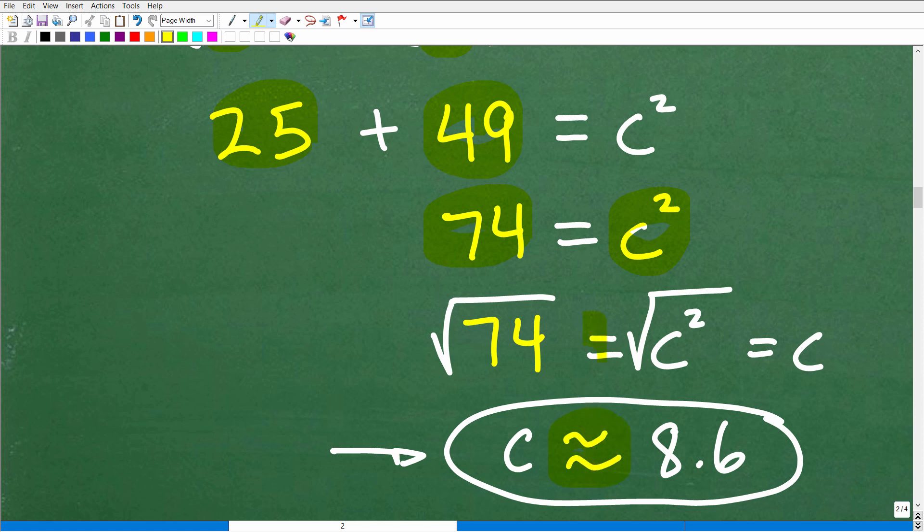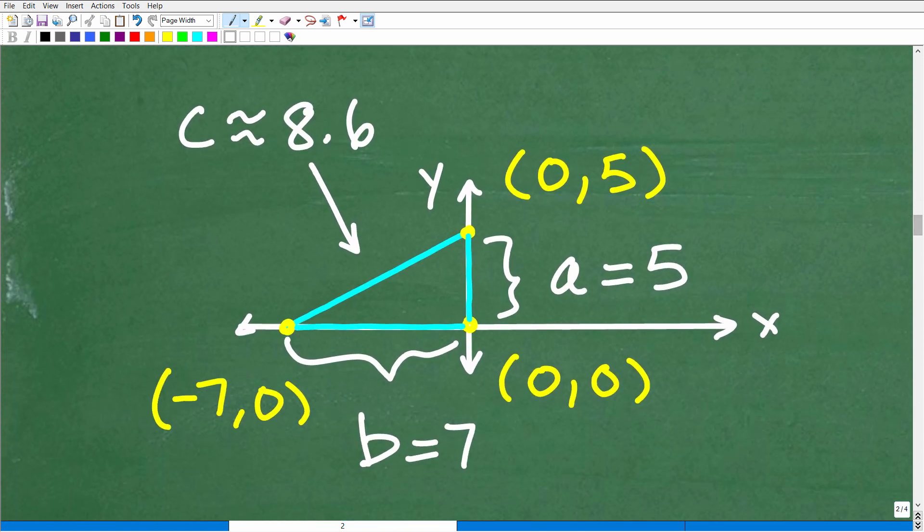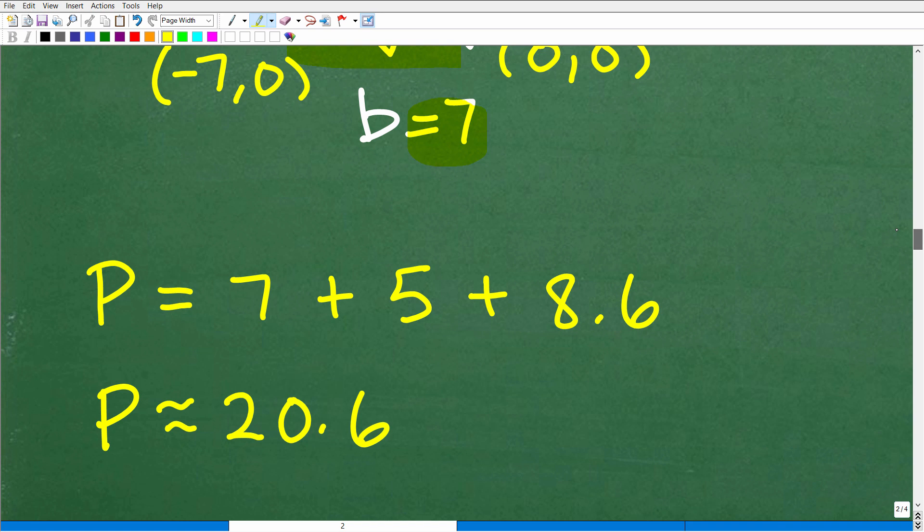So we'll say that side c is approximately 8.6. That little squiggly symbol is in contrast to this symbol, which means exactly, perfectly. But once you take a decimal estimation or round off your decimal, you're dealing with an approximation, which is okay in this case because we're calculating the perimeter. We'll use this approximate value for c, which is 8.6. So now this is very easy to do. This side of the triangle is 8.6, this side is 5, this side is 7. So the perimeter is simply the sum total of the sides: 7, 5, and 8.6.